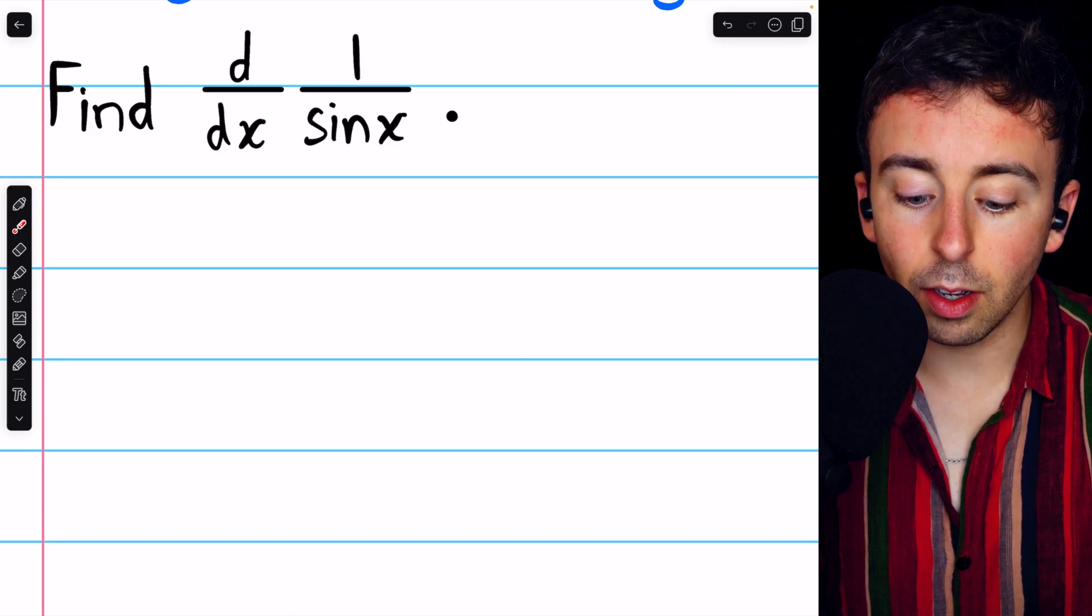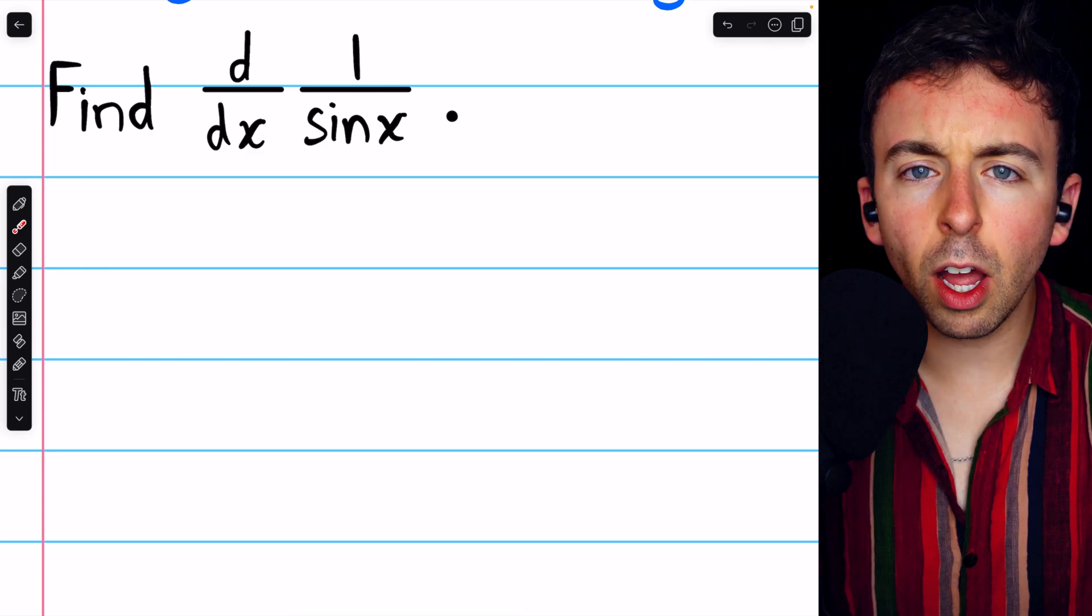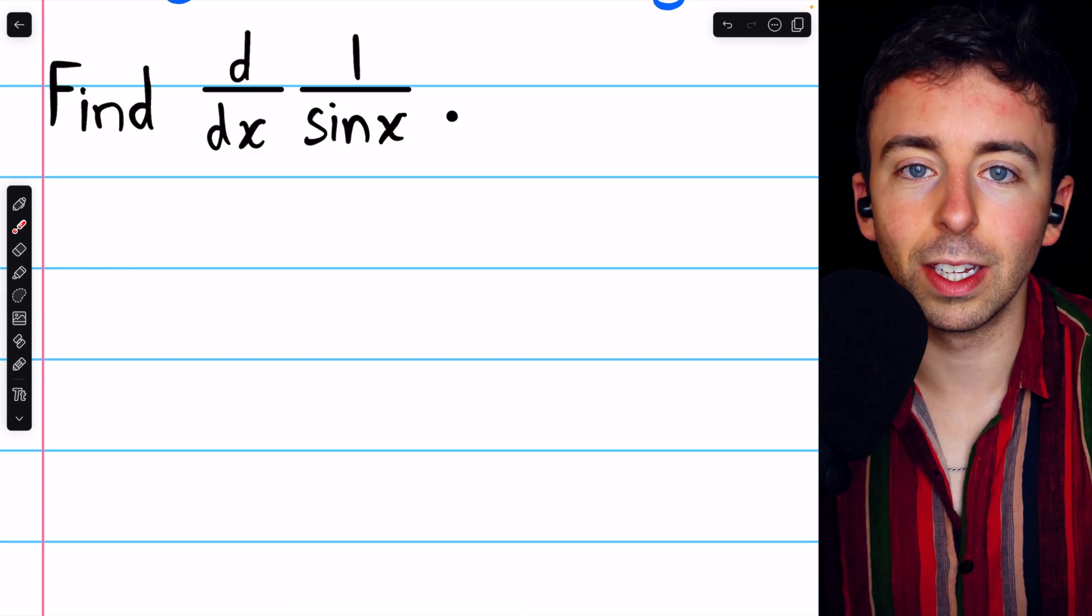We have 1 divided by sine x, so we can take this derivative using the quotient rule. We could also use the chain rule, but I'm going to opt for the more basic rule in this video.